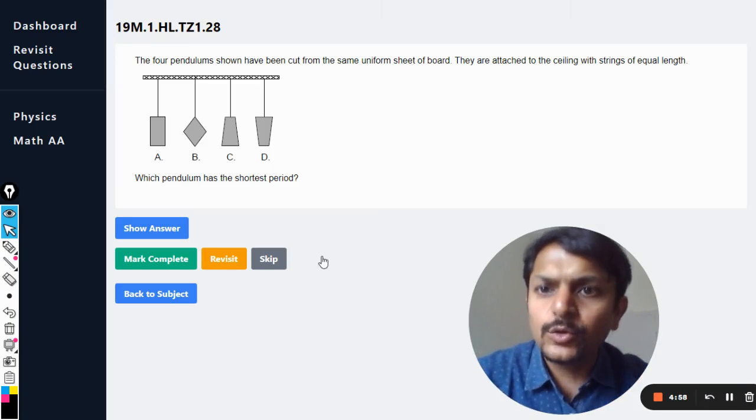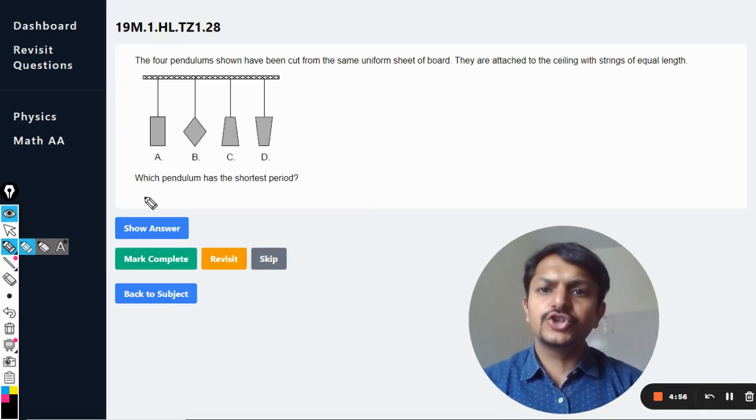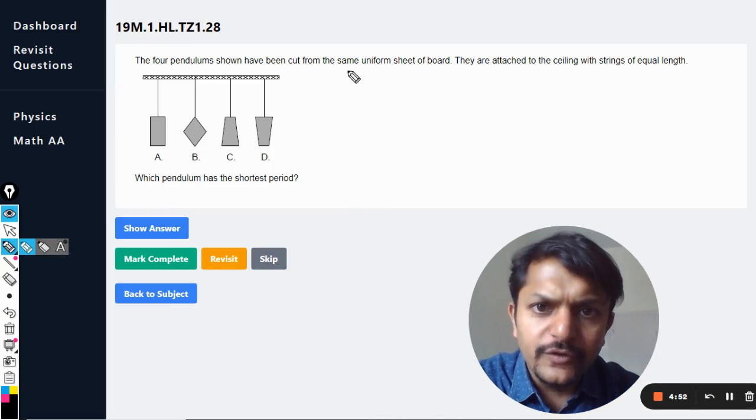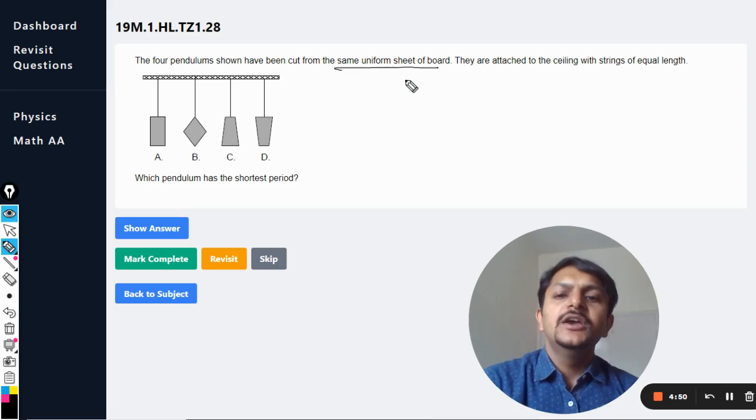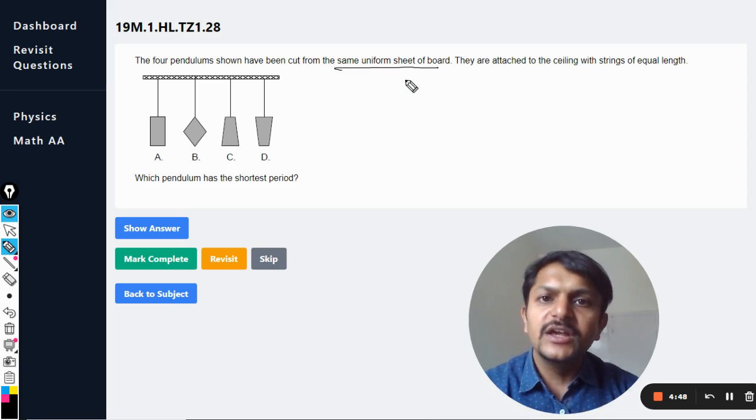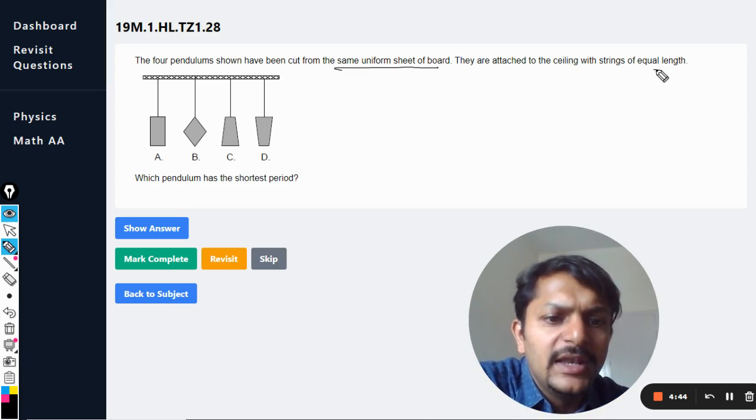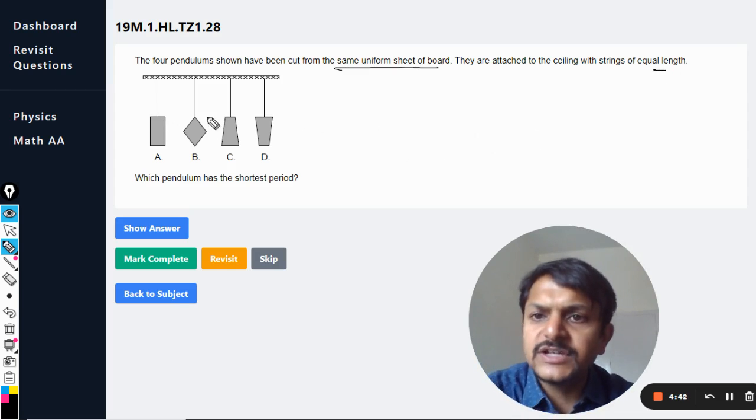Okay dear students, let us see what is there in this question. The four pendulums shown have been cut from the same uniform sheet of the board, so the mass per unit area is the same. They are attached to the ceiling with strings of equal length.